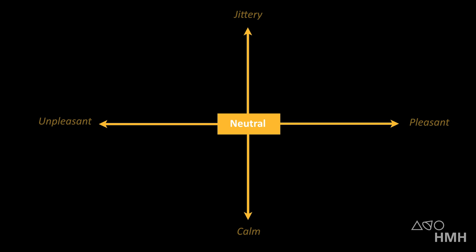To make an emotion, you need core brain networks to do a couple of things. First, your brain has to represent all the stuff going on inside your body — your heart beating, your lungs filling and emptying, your stomach digesting food, your hormones rushing through your bloodstream, and the workings of your immune system. This activity produces a spectrum of basic feeling from pleasant to unpleasant and from calm to jittery.